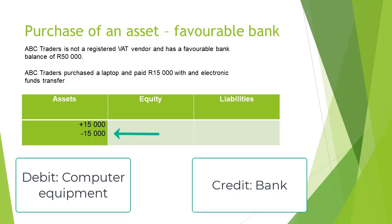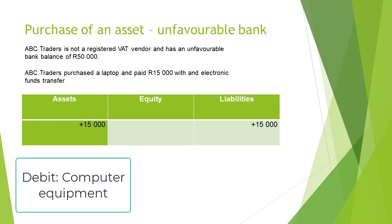And the bank account will be credited with 15,000 Rand. If we now change the example and make the statement that the business has an unfavourable bank balance, then it means that the bank is in overdraft and the business owes the money to the bank.